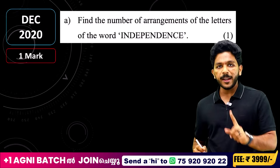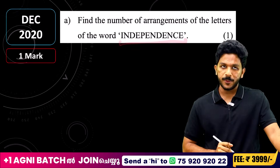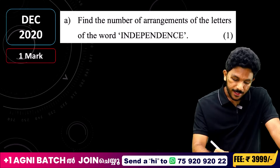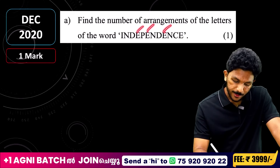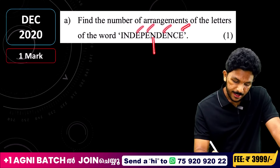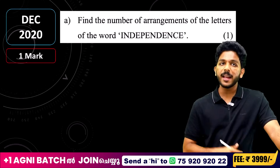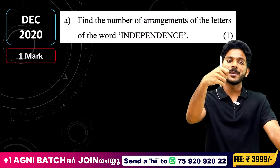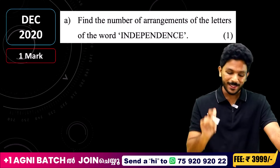This is homework for you: INDEPENDENCE. How many arrangements are there? E appears 4 times, N appears 2 times, D appears 2 times — there is repetition. Write your answer in the comments below.